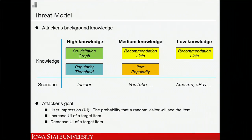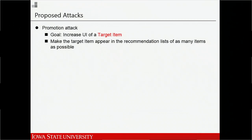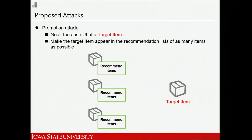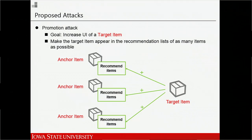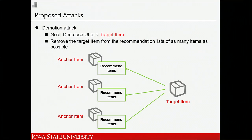There are two different attacker goals. First, the attacker may want to increase the user impression of its own item. On the other hand, it may want to decrease the user impression of a competitor's item. Based on these two goals, we propose two types of attacks. The first is promotion attack: the goal is to increase the user impression of a target item by adding it to the recommendation list of as many items as possible — these other items are called anchor items. The second is demotion attack: the goal is to remove a target item from the recommendation list of as many items as possible.